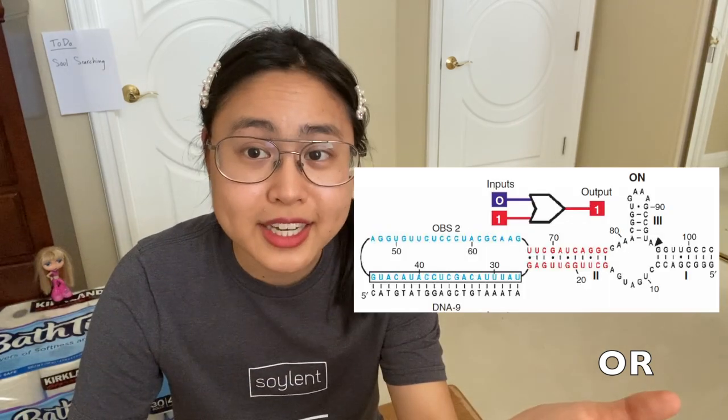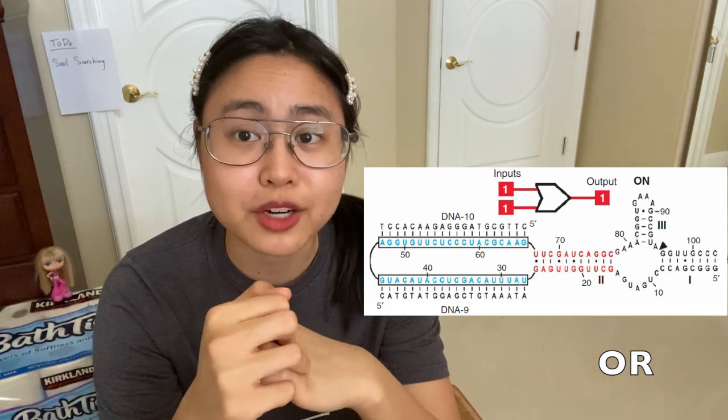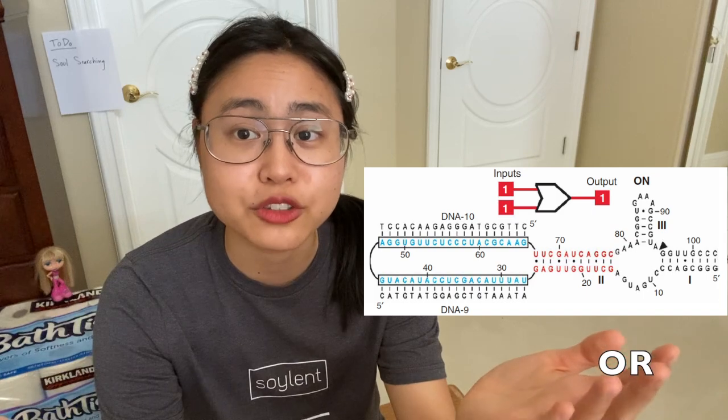The fourth and last logic gate is the OR gate. Imagine you're off to fight some giants in the forbidden forest. You don't really need both Ron and Hermione — you could use one or the other, and if both are available you could take both. It's called the OR gate because you can have one DNA sequence present, or the other, or both, in order for the red regions to align and for the riboswitch to eventually self-cleave.